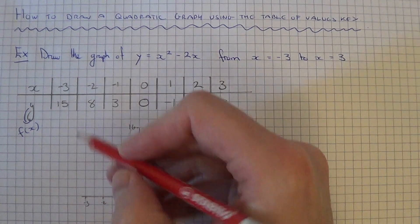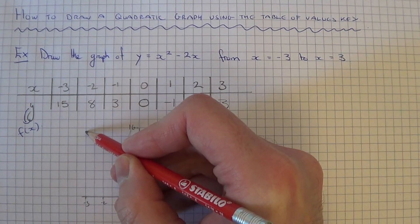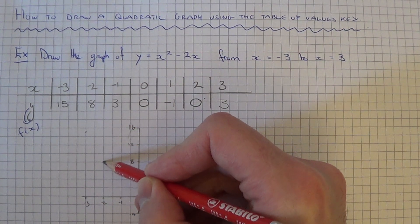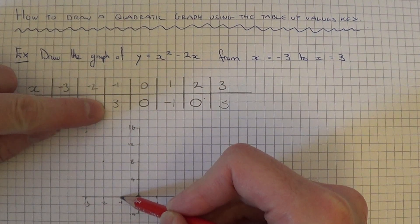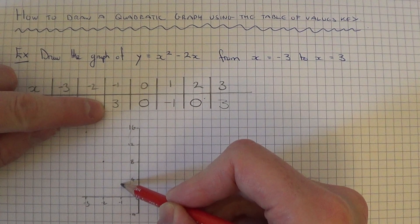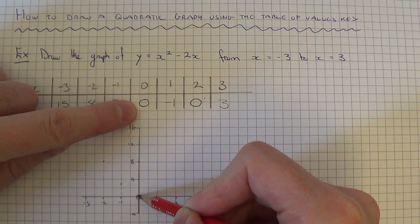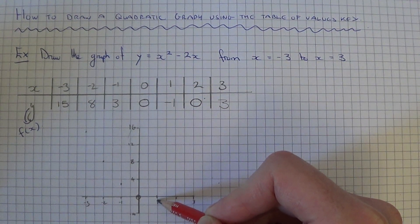At minus 3, the y coordinate was 15. At minus 2, the y coordinate was 8. At minus 1, the y coordinate was 3. At 0, the y coordinate was 0. At 1, the y coordinate was minus 1.